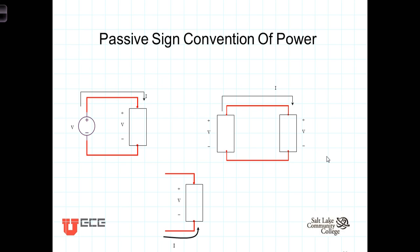In this video, we're going to introduce the concept of the passive sign convention of power. The passive sign convention is used to account for the power in a circuit. It's related to the conservation of energy principles, which state that the power put into a circuit must equal the power taken from the circuit, or Pout equals Pin.